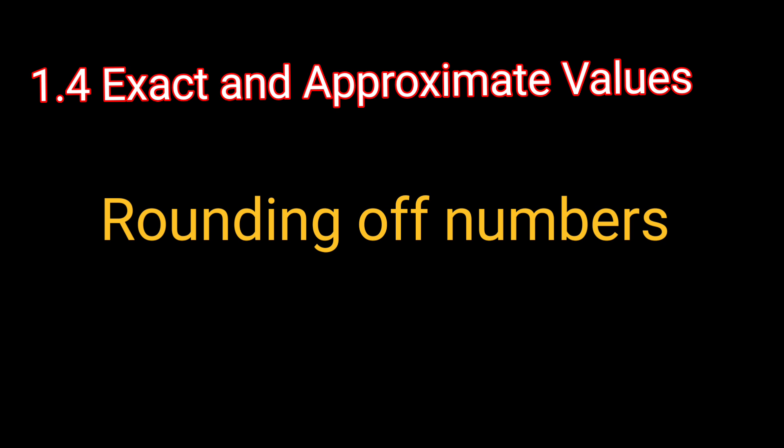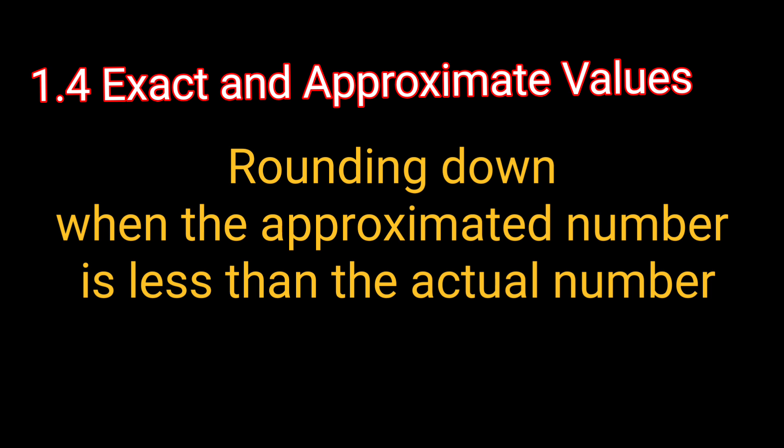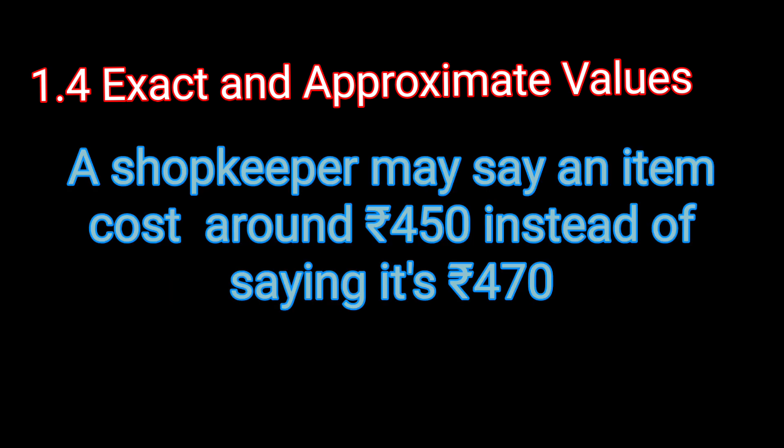In section 1.4, exact and approximate values, you would learn about rounding off numbers. Sometimes exact numbers are not needed — an approximate number gives a good enough idea. For example, there are 732 students in your school and the principal wants to order sweets, so she might order 750 sweets. That is rounding up, using a slightly bigger number. Rounding down means using a slightly smaller number — for example, a shopkeeper may say an item costs around 450 rupees instead of 470.